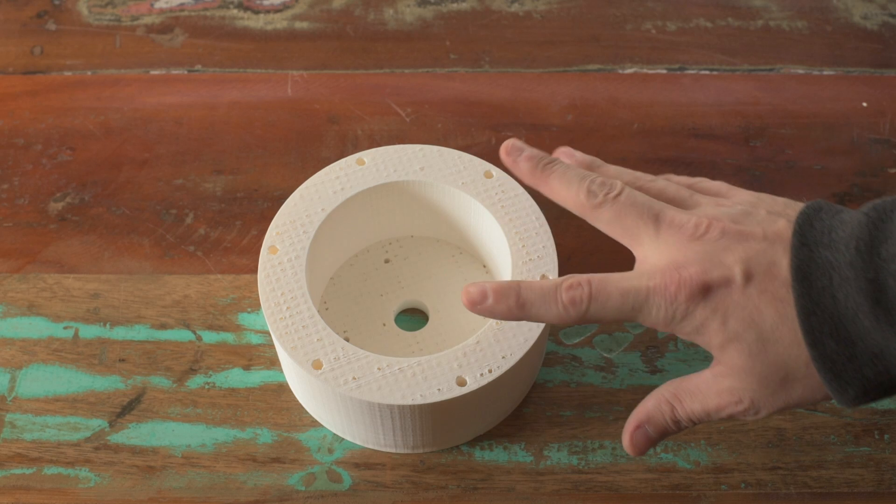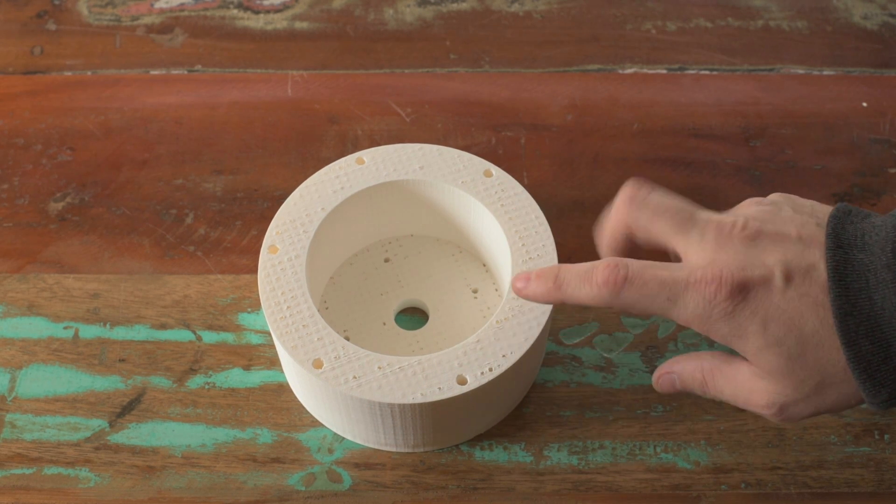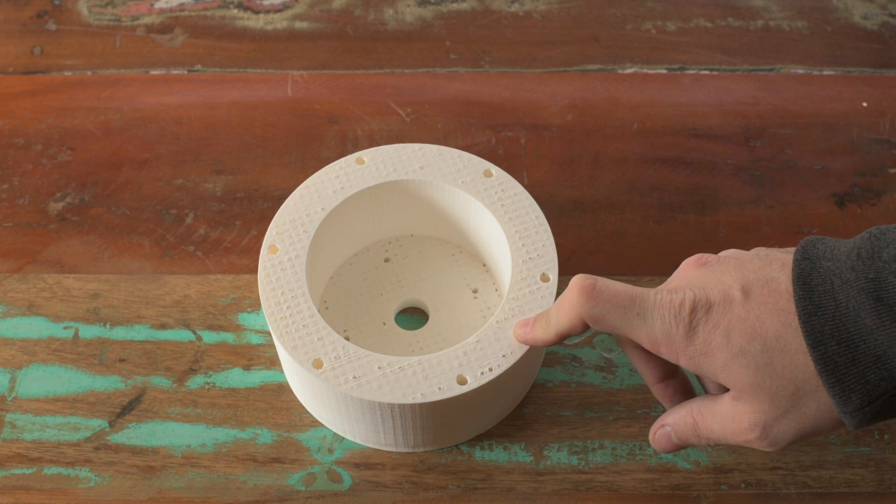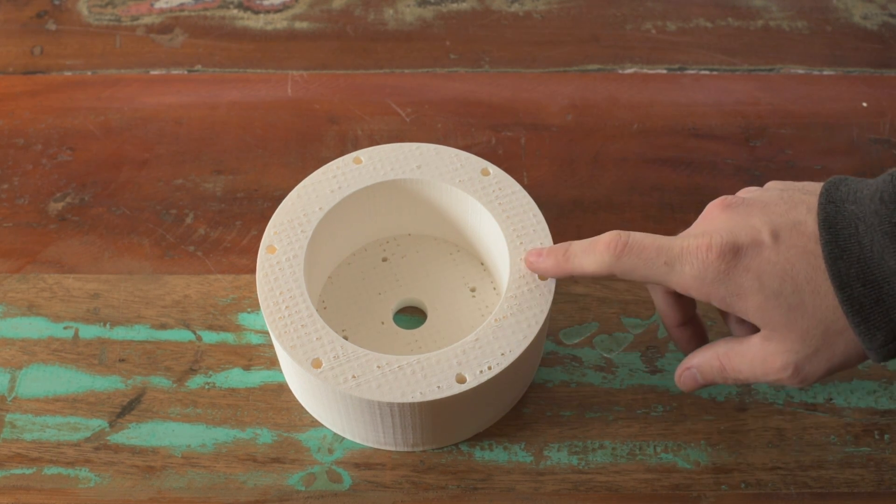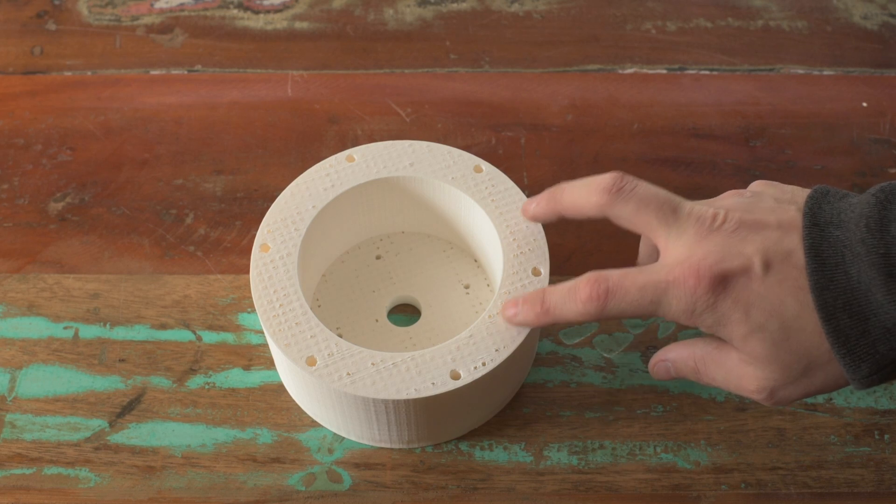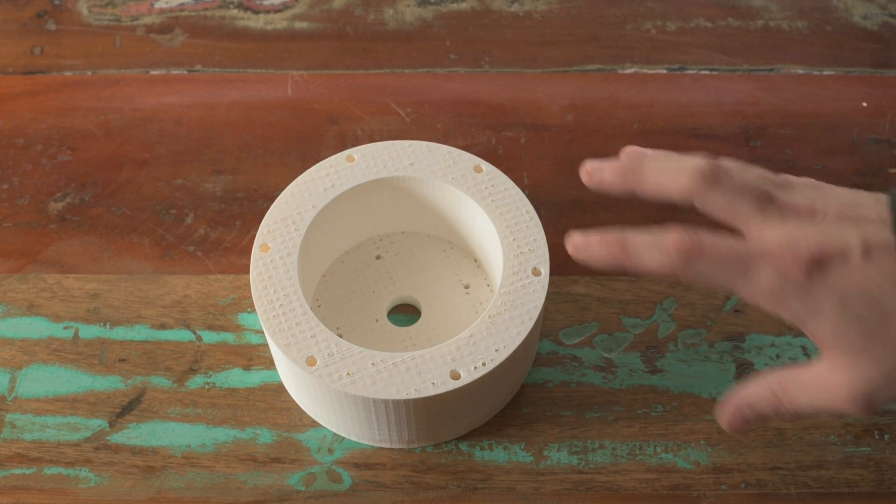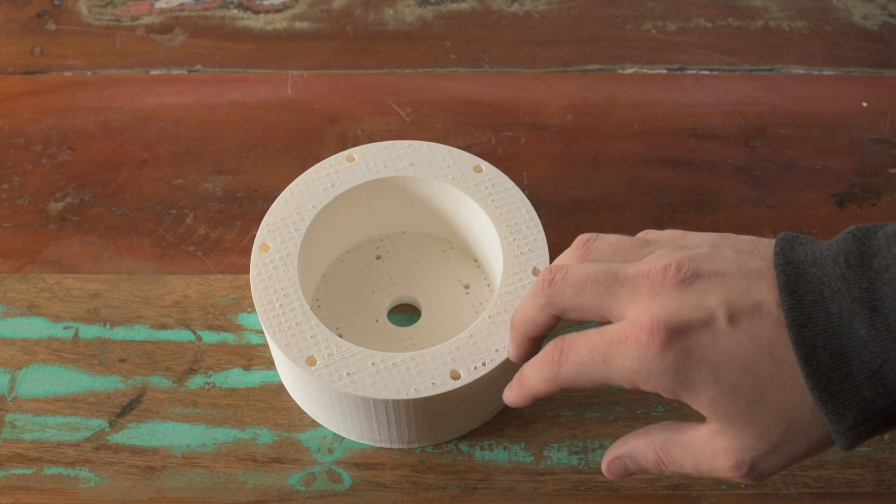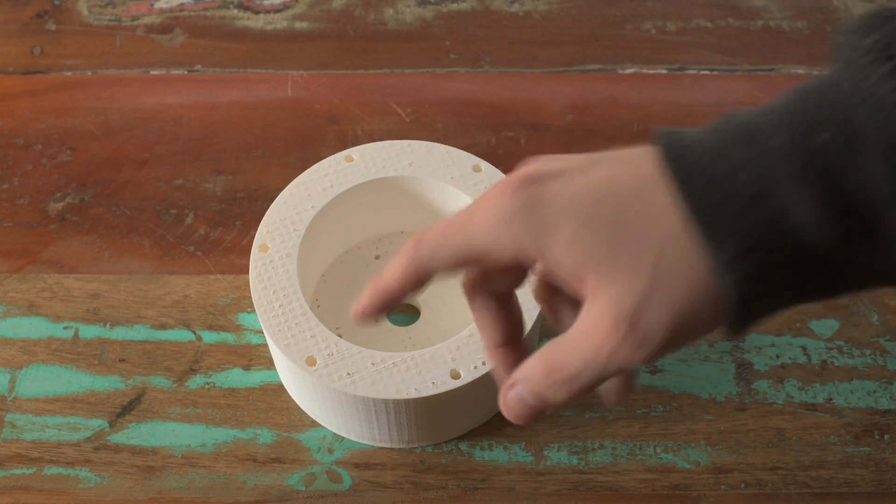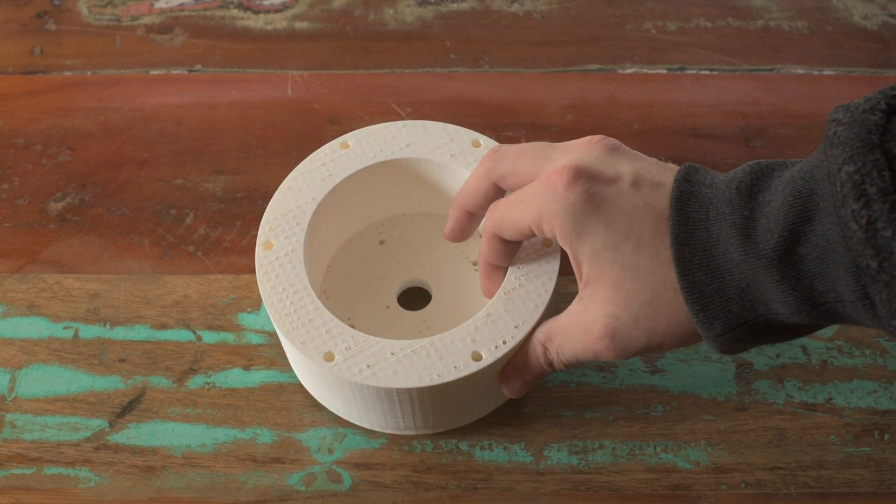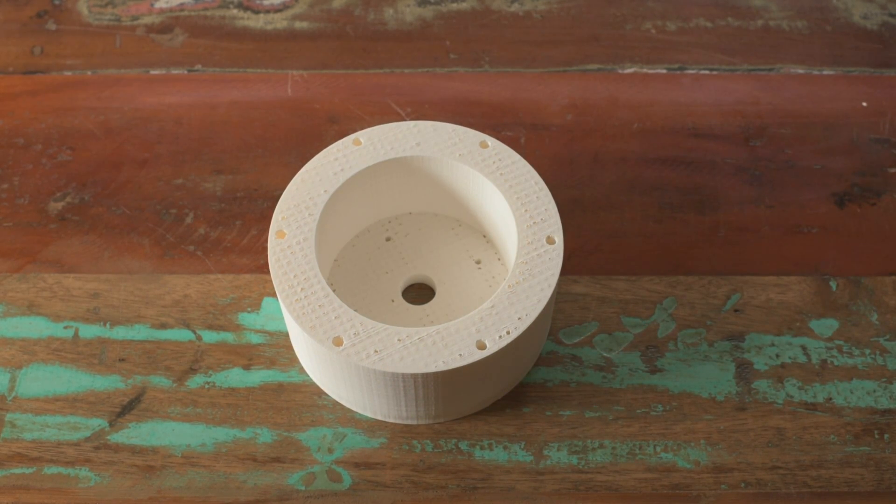When I went to slice this, I usually use Skeinforge because I get better results with Skeinforge with that particular printer, even though Slicer was the standard even when that printer came out. When I went to slice this with Skeinforge, it wouldn't slice. I don't know why. It's a very simple part. It's just cylinders and holes cut out. There's nothing to it really.